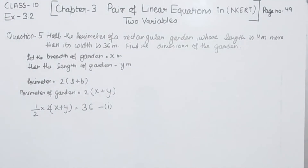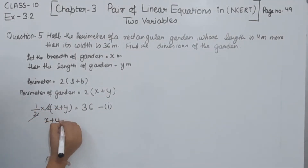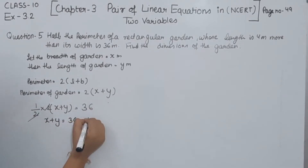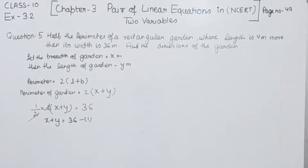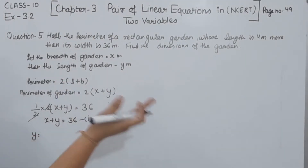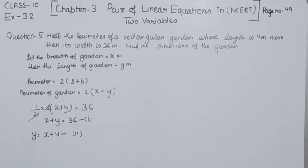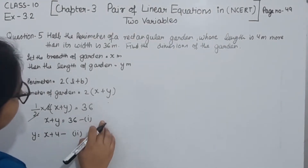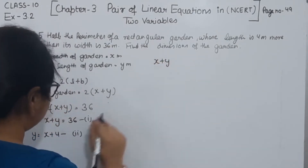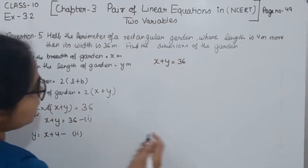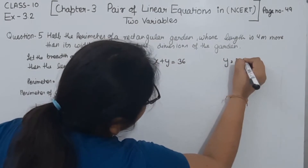Now we will solve this. The 2 is cancelled, giving us x plus y as equal to 36. So this is equation number 1. Now the second statement says the length is 4 meter more than its width. Length is y and width is x, so y is equal to x plus 4. This is equation number 2.